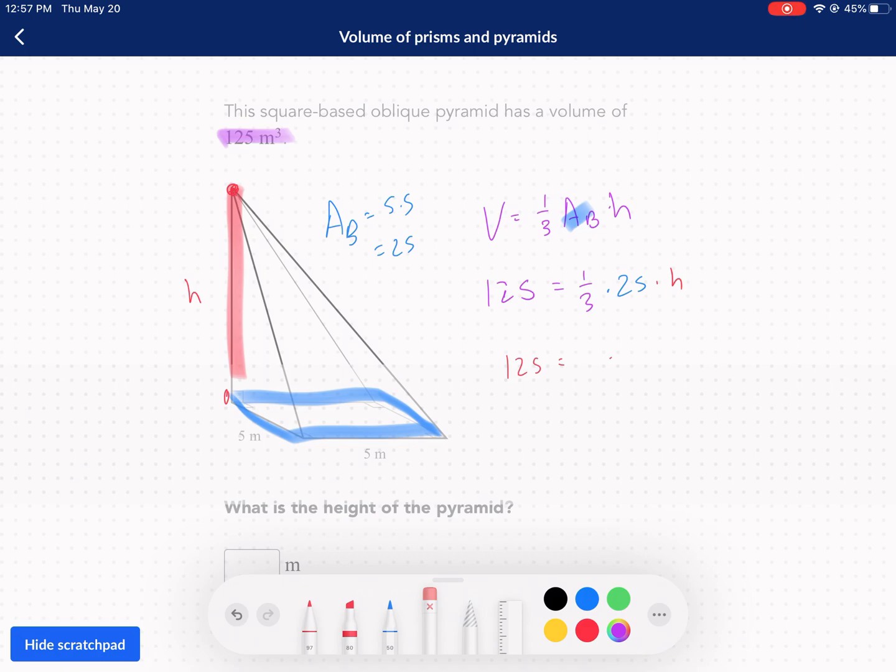I'm going to write 25 over 3 times h. So now I'm going to multiply by the reciprocal to get rid of it. That cancels with that. We're left with h on the right. Now, we have 125 is going to cancel with the 25, leaving me 5. 5 times 3 in the numerator, 15. So my h is equal to 15 meters. These are great problems.